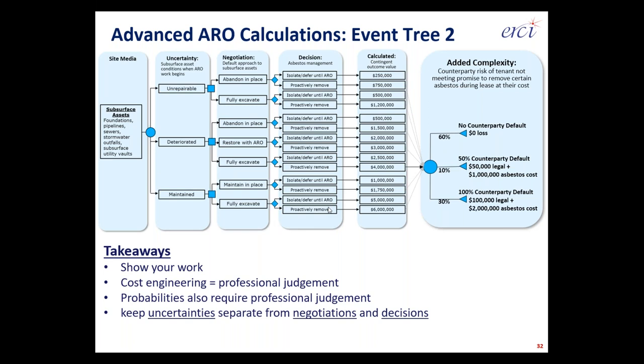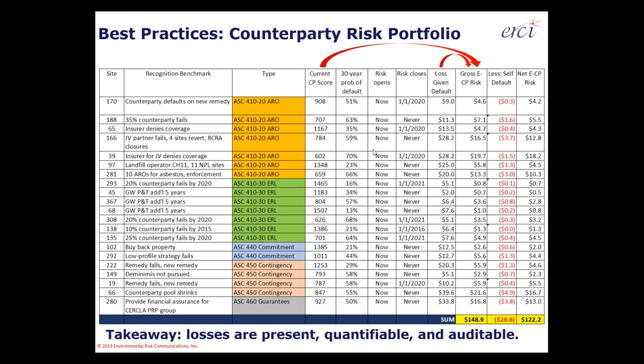The methods for calculating counterparty risk are fairly straightforward. There are common terms in place for loss given default. We're in an environment today where most every economically active enterprise has a known credit score that we can use as a basis for predicting the long-term probability of a default against an environmental liability. There's a separate webinar on our YouTube page that covers just this topic in detail.